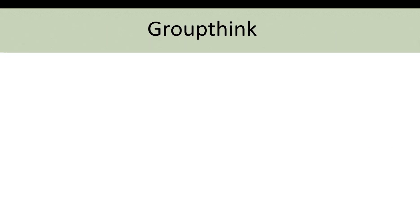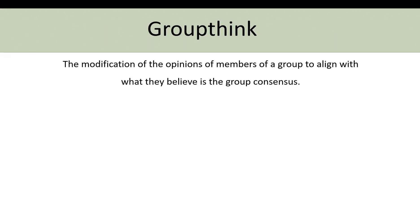Next we'll talk about groupthink. Groupthink is the modification of the opinions of group members in order to align with what they believe is the group consensus. Groupthink can hinder opposing trains of thought — if everyone in the group thinks the same way, groupthink can suppress your differing viewpoint.